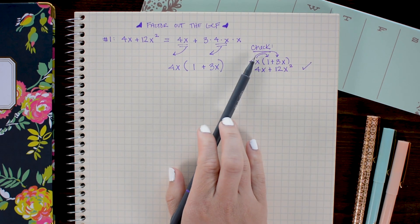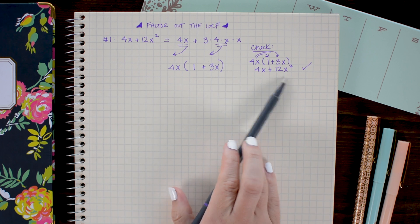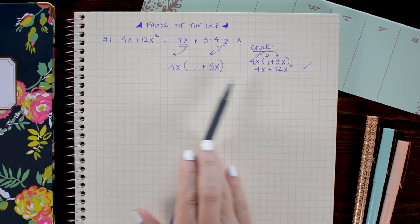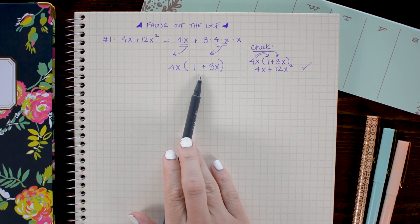Since when we distributed the 4x back through, we got 4x plus 12x squared, I have ensured that I have correctly factored out the greatest common factor.